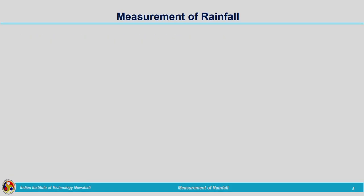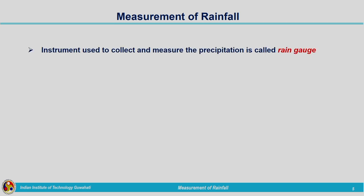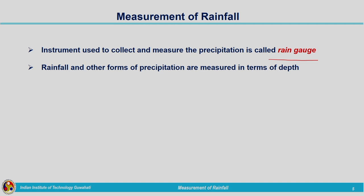Coming to the measurement of rainfall, the instrument used to collect and measure precipitation is called a rain gauge. Rainfall and other forms of precipitation are measured in terms of depth — expressed in millimeters or centimeters. There are different types of gauges: one is the non-recording rain gauge and the other is the recording rain gauge.